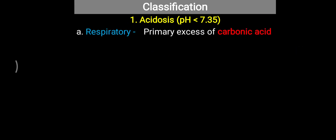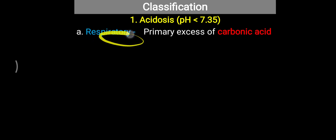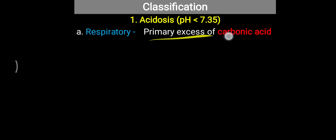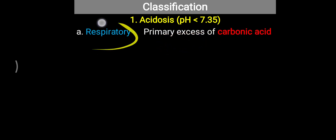The first category is respiratory acidosis. We already know the three defense mechanisms: the bicarbonate buffer system, the respiratory system, and the renal system. But due to some respiratory condition, there is a primary excess of carbonic acid generated. If there is a blockage in the respiratory system, carbon dioxide is not eliminated from the body. This CO2 remains inside and forms carbonic acid, and due to excess carbonic acid, respiratory acidosis is generated — with pH less than 7.35.